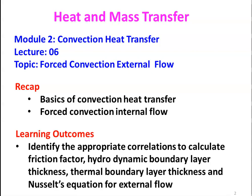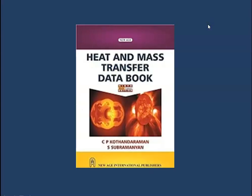We are not going to do any mathematical derivation for forced convection external flow. We are going to identify the appropriate correlation equations available in the heat and mass transfer data book for parameters like friction factor, drag force, hydrodynamic boundary layer thickness, thermal boundary layer thickness, heat transfer coefficient, and finally calculate the heat transfer. This is the data book which is permitted in the university examination — keep a copy to regularly practice.